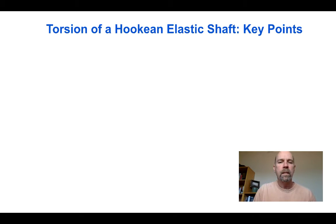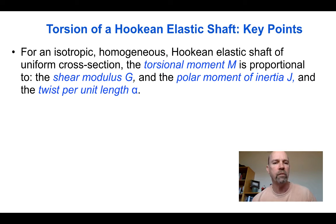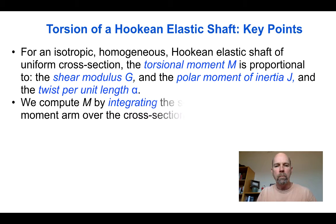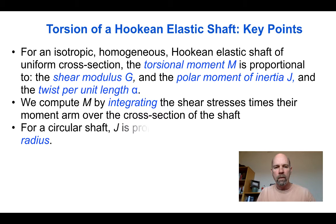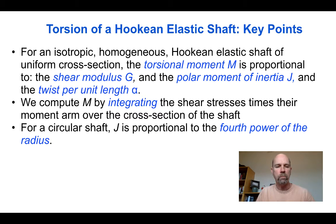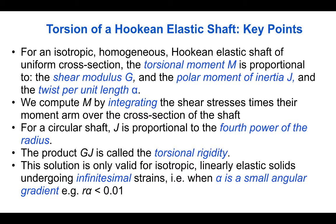To summarize the key points from our derivation: for an isotropic homogeneous Hookean elastic shaft of uniform cross section, the torsional moment M is proportional to the shear modulus G, the polar moment of inertia J, and the twist per unit length alpha. M is computed by integrating the shear stresses times their corresponding moment arms over the cross section. For a circular shaft, J is proportional to the fourth power of the radius; the product G*J is called the torsional rigidity. This solution is valid for isotropic linearly elastic solids undergoing infinitesimal strains, meaning alpha must be small — for example, less than 0.01.